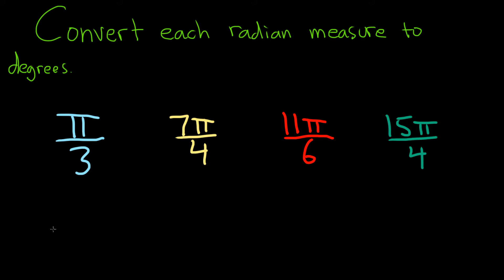The way I memorize it is, in order to convert from degrees to radians, you want to put a pi there, so you multiply by pi over 180. But to get rid of the pi, you multiply by 180 over pi. It doesn't mean there's always a pi there, but it's an easy way to remember it. So 180 over pi.